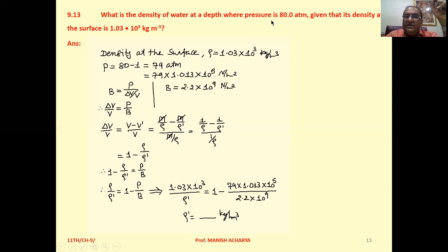Now pressure at a certain depth is 80 atmospheres. So pressure of the water column only, that is how much? At the surface of the water, that is atmospheric pressure, which is 1 atmospheric pressure.